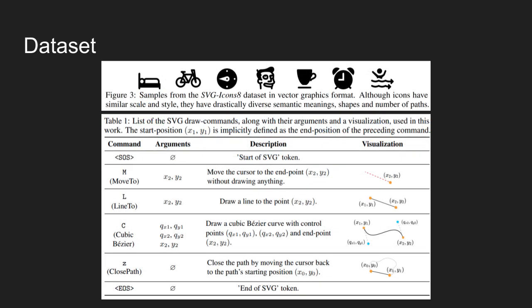Existing vector graphics datasets either only contain straight lines or are constrained to font generation. The authors of the paper introduced a new dataset called SVG Icons, which consists of 100,000 high-quality icons in 56 different categories.